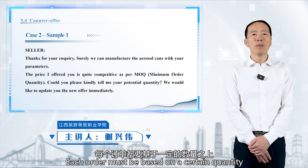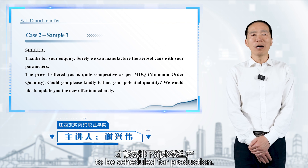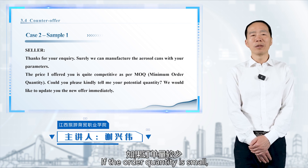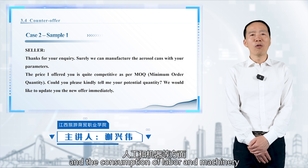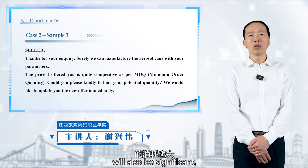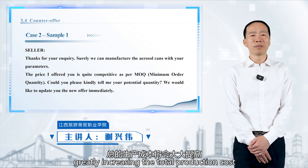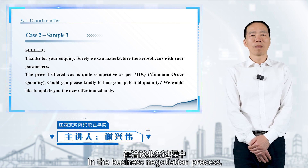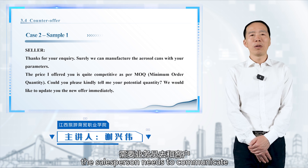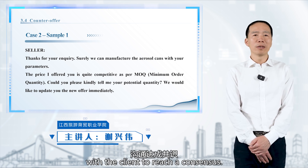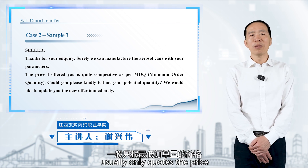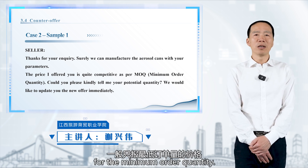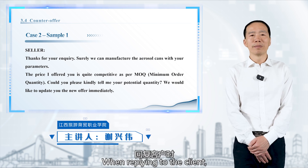Each order must be based on a certain quantity to be scheduled for production. If the order quantity is small, the material scrap rate will be high and the consumption of labor and machinery will also be significant, greatly increasing the total production cost. In the business negotiation process, the salesperson needs to communicate with the client to reach a consensus. The first quotation usually only quotes the price for the minimum order quantity.